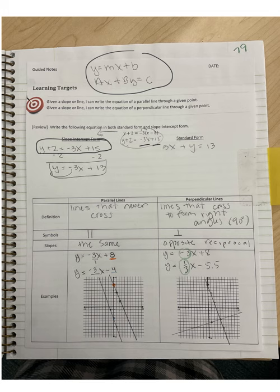And then we went ahead and we added 3x to both sides right here, and then that got you standard form, which is 3x plus y equals 13.